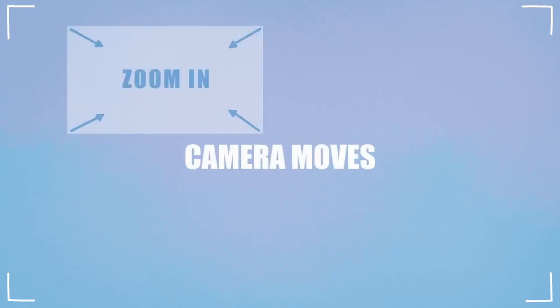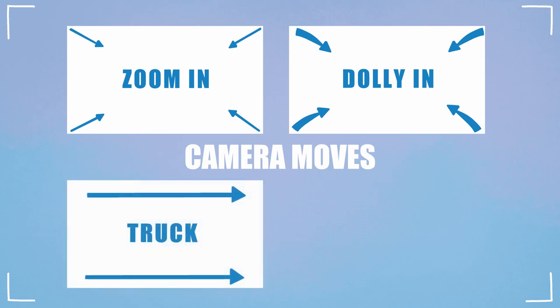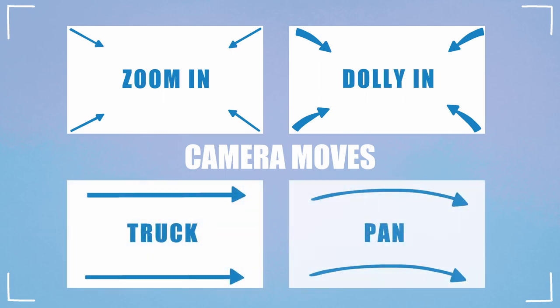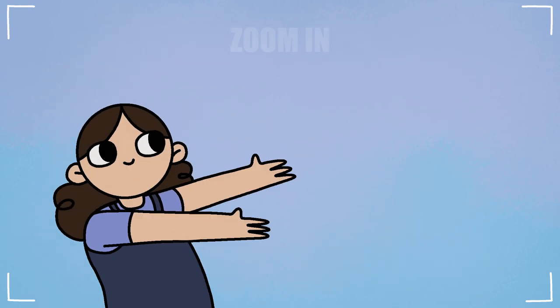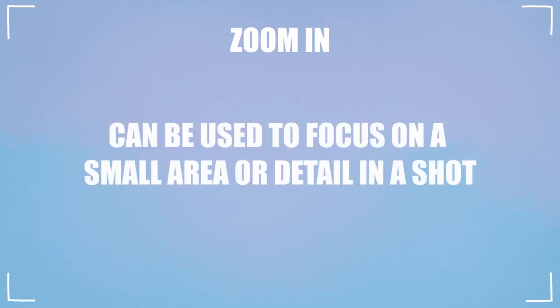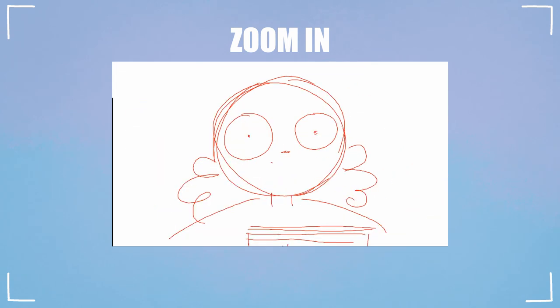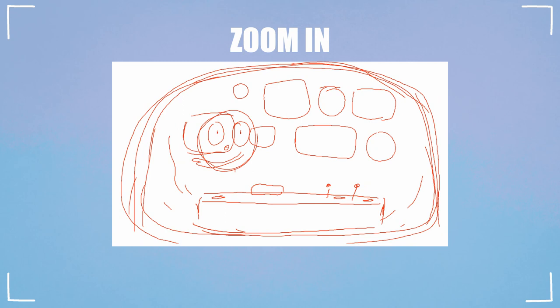If there are any camera moves in a scene, I'll use a different colour and arrows to show the movement in the boards. Adding in notes beneath the panel helps a lot if the move is complex, and if I'm working with other people I need to make sure everything is as clear as possible. A couple of camera moves I've planned to use in the storytime are — zoom-in: you can use this to focus on a certain area or small detail in a shot. For this particular move, it's going to be quite quick to create a bit of drama and will help me with a transition to the next shot.